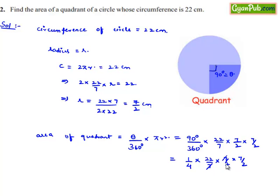Here 7 goes in 7 one time and 2 goes in 22 eleven times. So that is equal to 11 times 7 is 77 divided by 4 times 2 is 8. Therefore, we got the final answer 77 by 8.